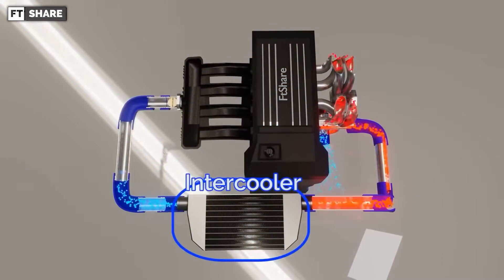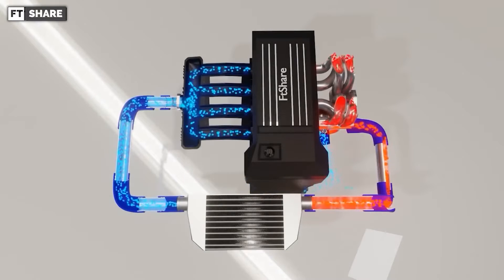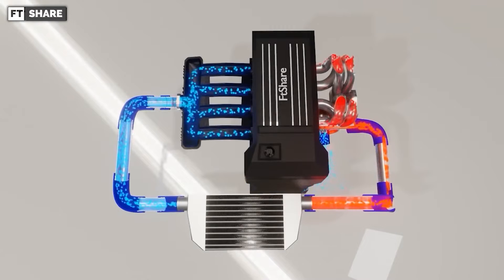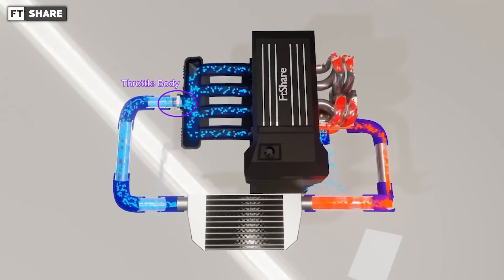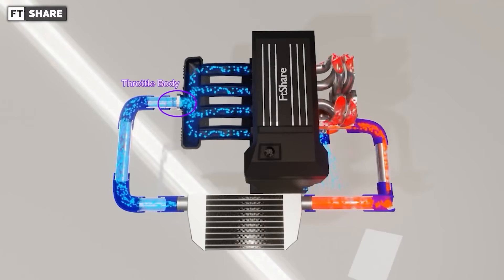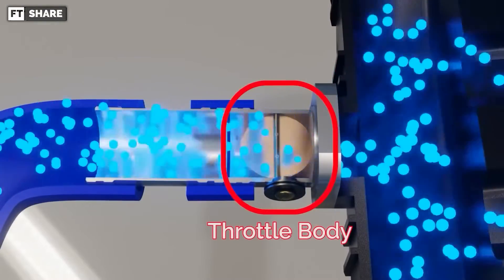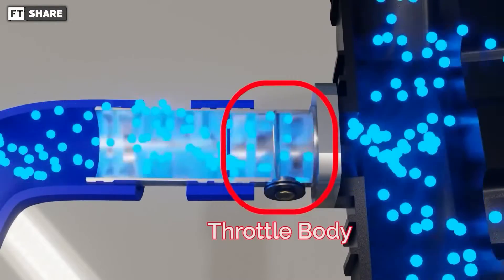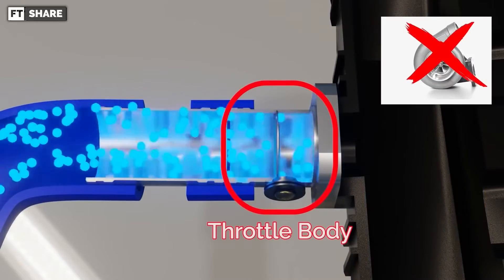However, after the intercooler, we'll run into another issue. It'll happen when we release the gas pedal while the turbocharger and engine are under load. This will cause the throttle body to close suddenly. This condition will cause a sudden backflow with high pressure, which could damage the ducting and the turbocharger unit itself.